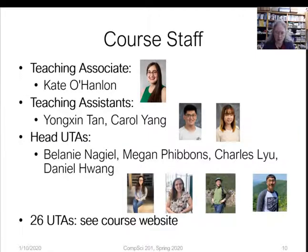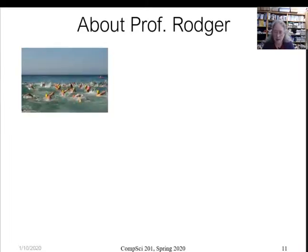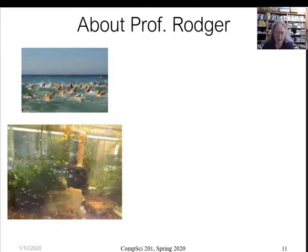Here's the course staff — there are 26 UTAs to help with this course, four of them head UTAs. A little bit about me: I like to swim. This is me swimming a one-mile race in the ocean in St. Croix, which was very beautiful. This is one of the many fish tanks in my house — we have 14 fish tanks, though that could change any day.